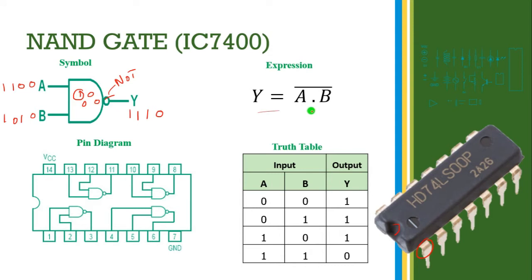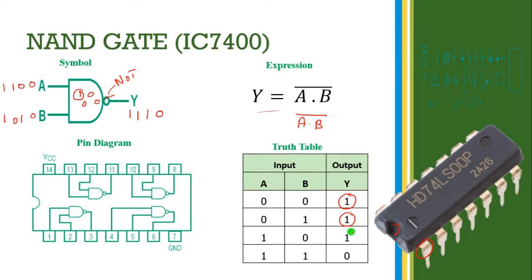This is the expression of the NAND gate: A dot B bar. If we take A dot B it is the AND gate — just inverting the AND gate output is called the NAND gate. Here is the truth table: 0,0 gives 1; 0,1 gives 1; 1,0 gives 1; 1,1 gives 0.